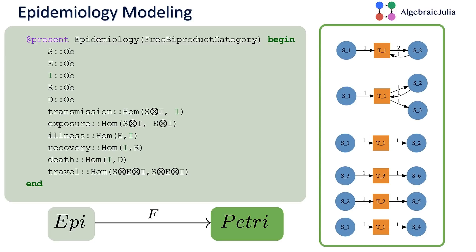Here's where we define our theory of epidemiology. We have objects for the different types of populations: S, E, I, R, and D. Then we have HOMs for the different types of processes: transmission, exposure, illness, recovery, death, and travel.